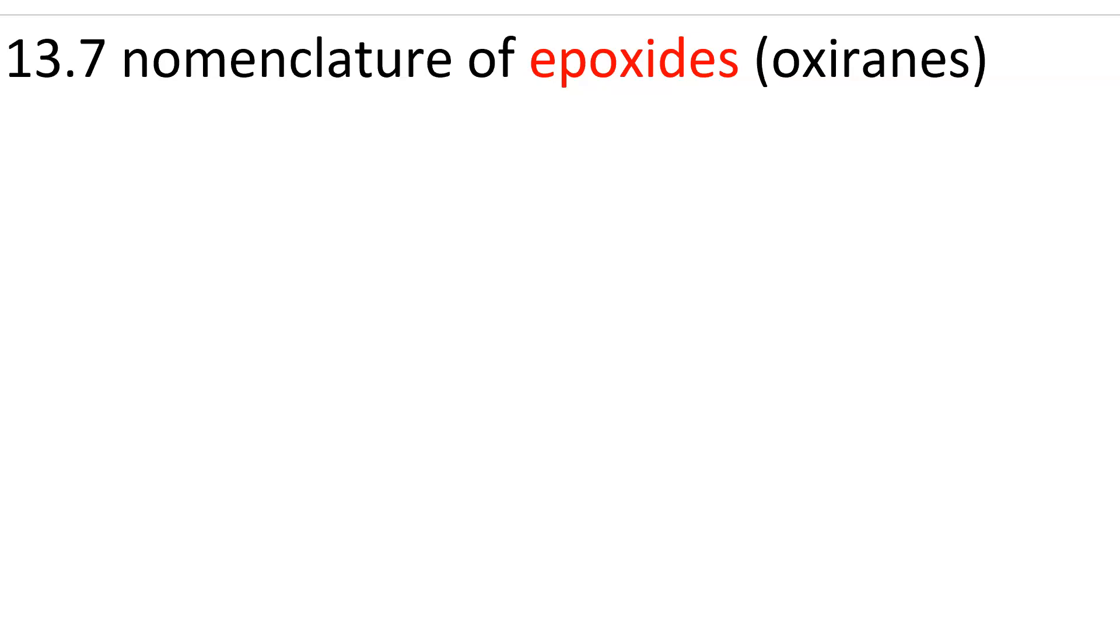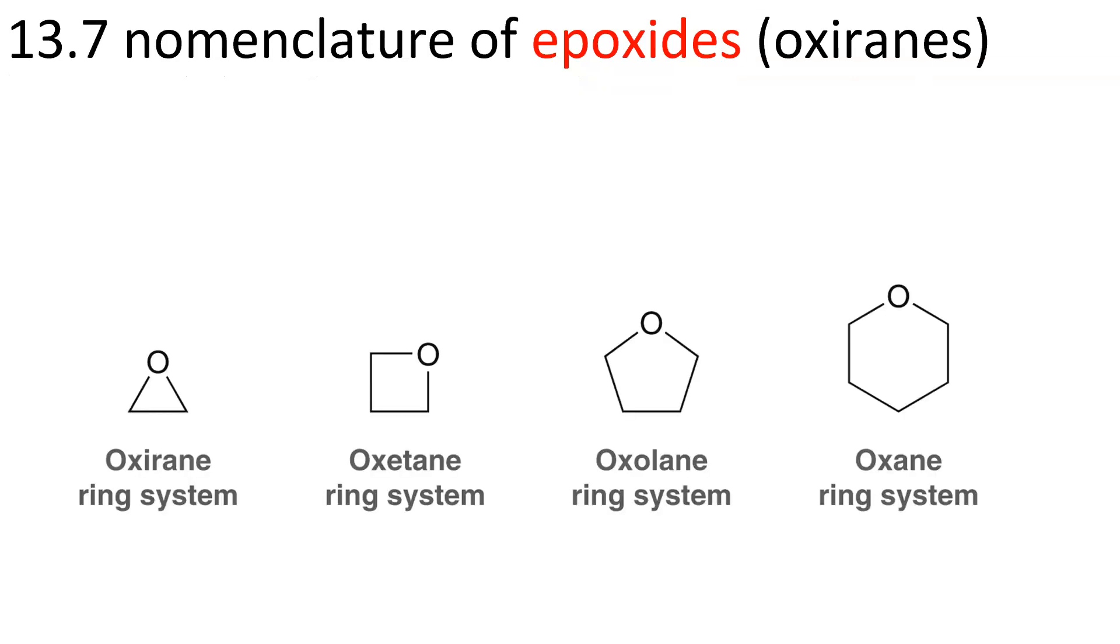Nomenclature of epoxides. Epoxides, also known as oxiranes, are cyclic three-membered ethers, where we're talking two carbons and an oxygen.